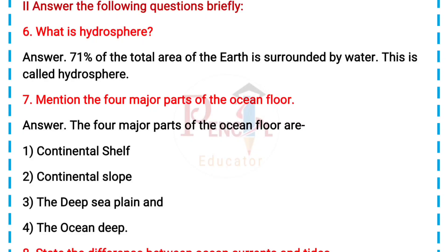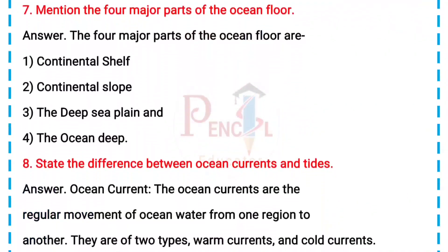2. Answer the following questions briefly. 6. What is hydrosphere? Answer: 71% of the total area of the earth is surrounded by water. This is called hydrosphere.